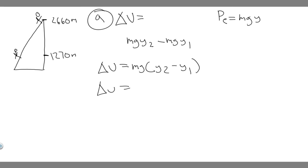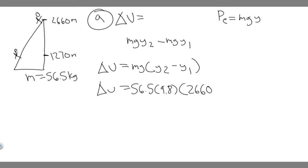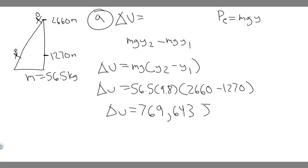Plugging in our values: the mass of the hiker is 56.5 kilograms, g is 9.8, and y₂ − y₁ is 2,660 minus 1,270. So we compute 56.5 × 9.8 × (2,660 − 1,270). That gives delta U equal to 769,643 joules, measured in joules. Rounding, that's approximately 770,000 joules.